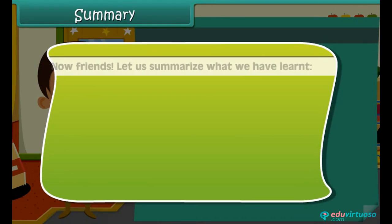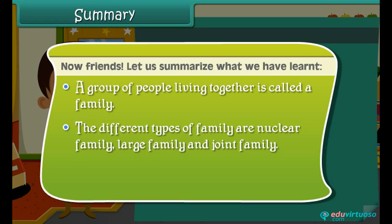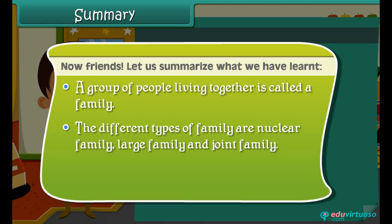Now friends, let us summarize what we have learned. A group of people living together is called a family. The different types of family are nuclear family, large family, and joint family.